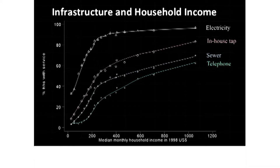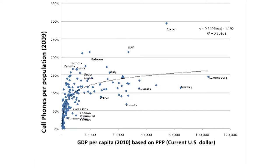I have to emphasize that most of these data come from the 1990s — this was before the era of the cell phone, so these telephone data are really for landlines. Cell phone coverage has spread like wildfire through the developing world. The next slide shows the number of cell phones per household in different countries as a function of GDP per capita, and the vertical axis actually exceeds 100%, meaning some households have more than one cell phone.